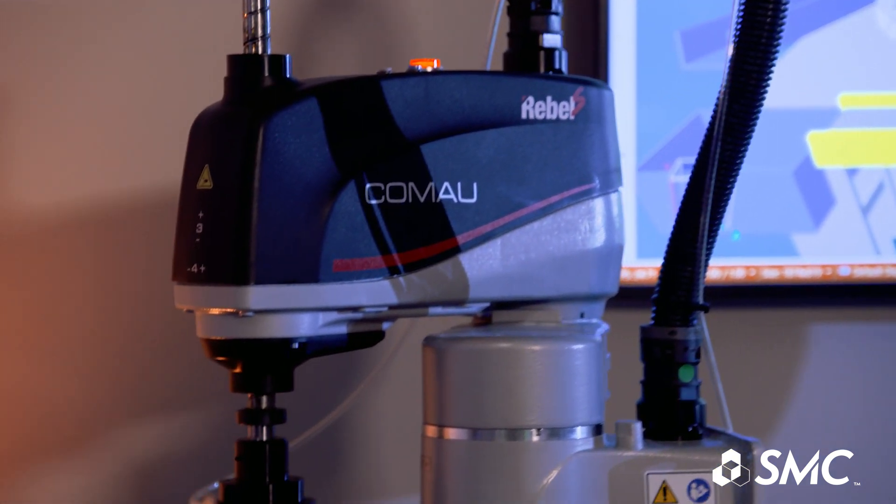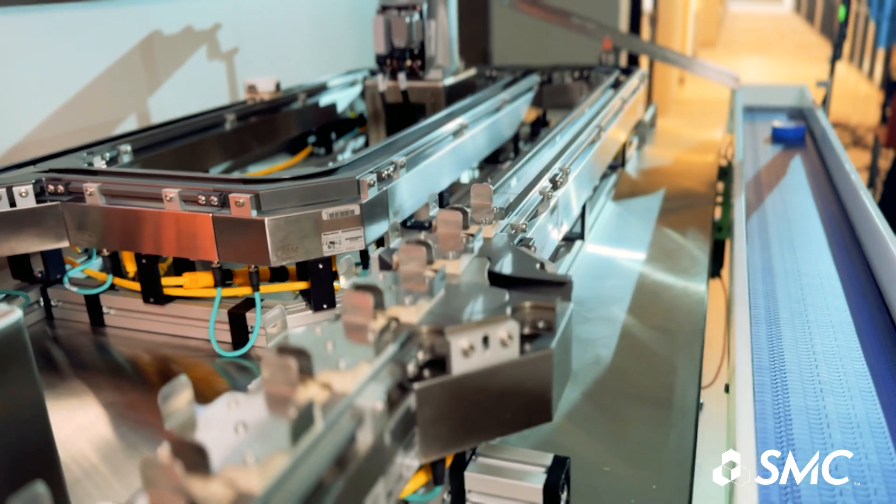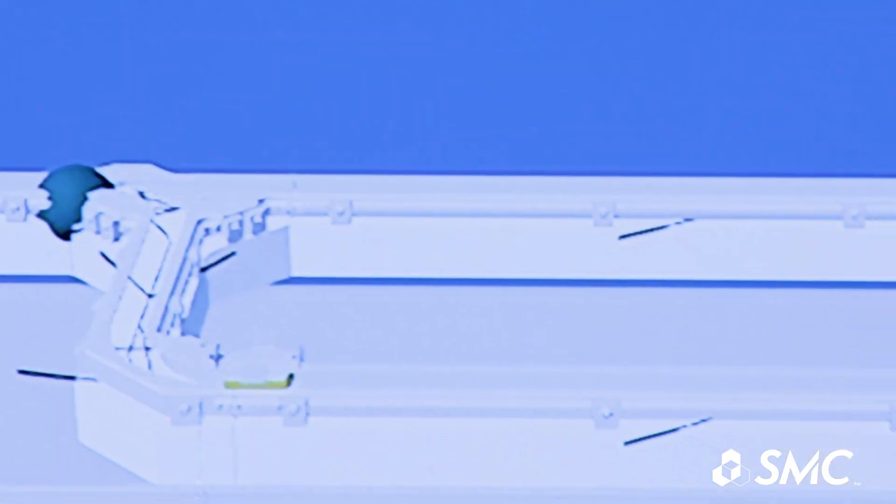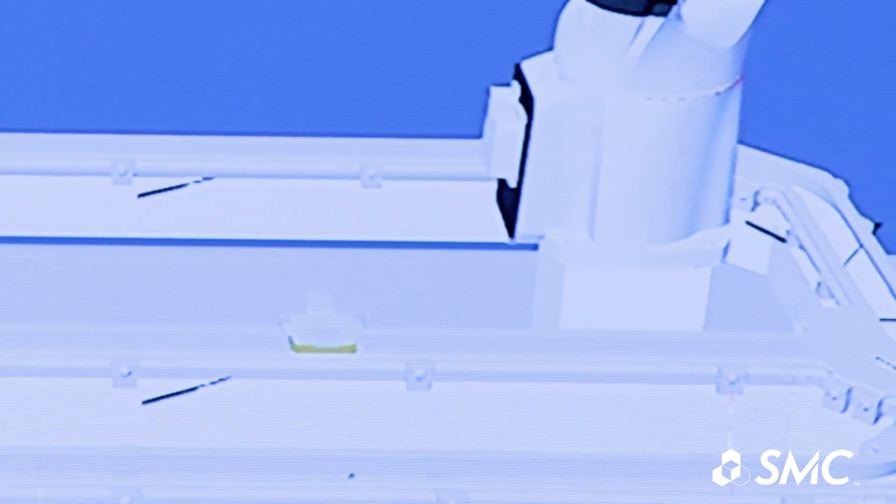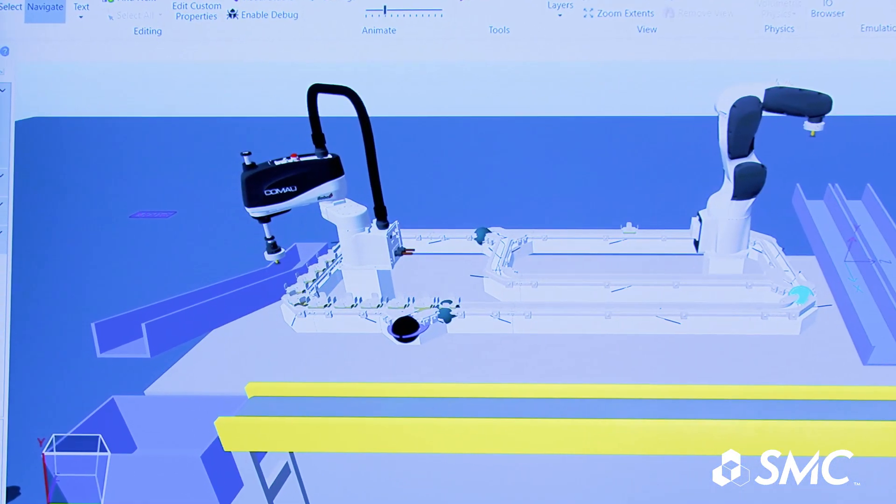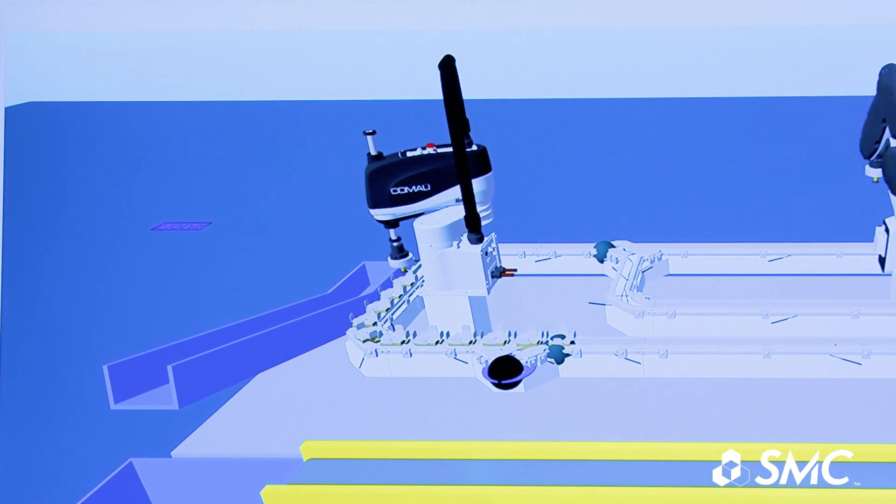MagnaMotion technology employs precisely controlled, independent movers that transport materials seamlessly throughout the manufacturing process on a track that can be laid out to fit the needs of the machine or line. What sets it apart is its remarkable flexibility. Picture a production line where modifications are not only possible, but are executed with the press of a button to change a recipe.